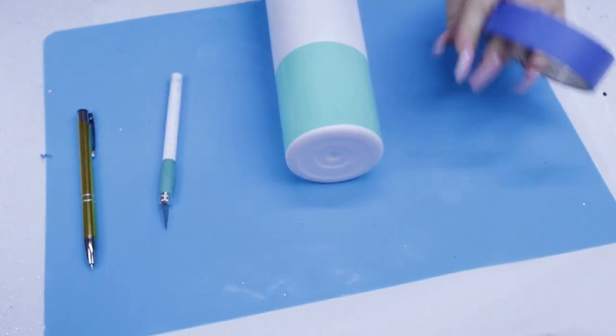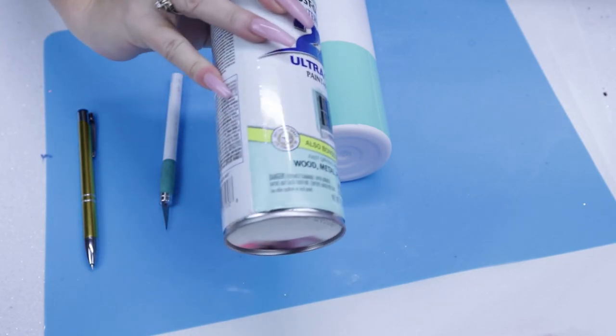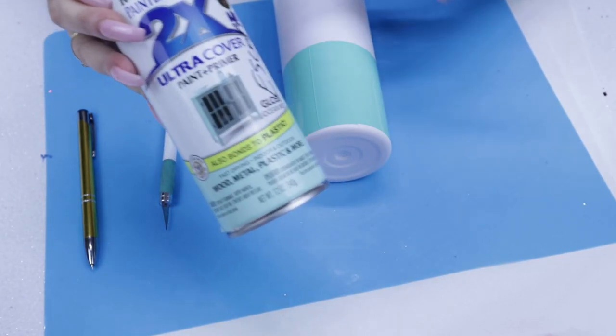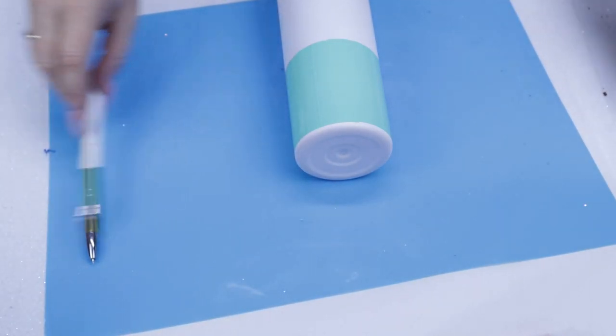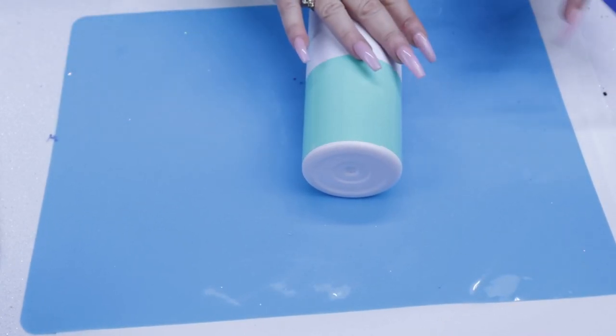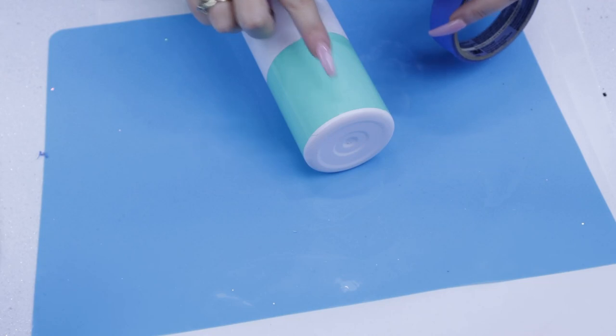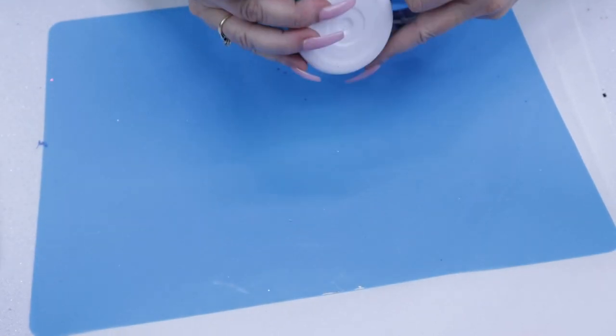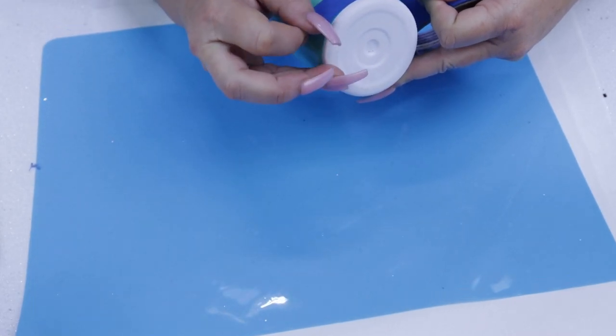Now, because my tumbler is white and my glitter is a mint green, it's imperative that I paint the tumbler. I'm going to use Rust-Oleum Ocean Mist, but I need to tape off that vinyl first. If your lines at the top or the bottom where your vinyl meets the tumbler are not even, here's the perfect opportunity where you can allow the painter's tape to line up and make a flawless line around your tumbler. However, if you had painted your cup to match the glitter, you can skip this step entirely.